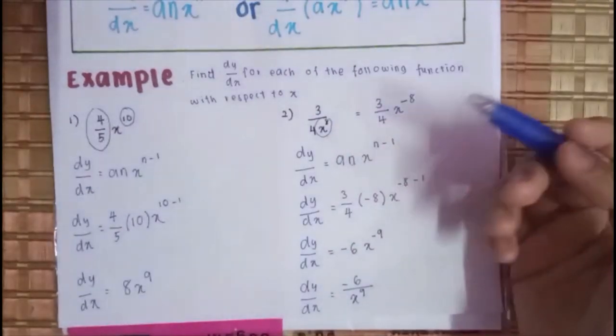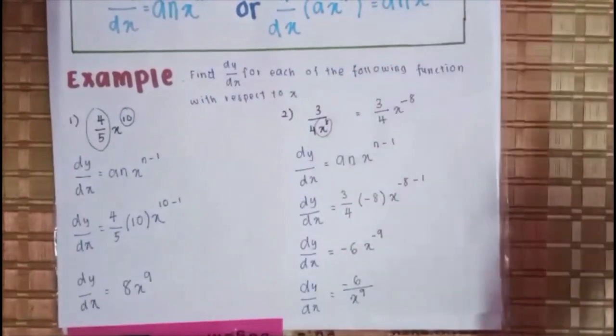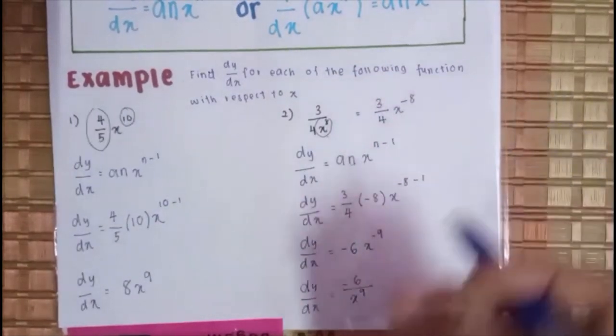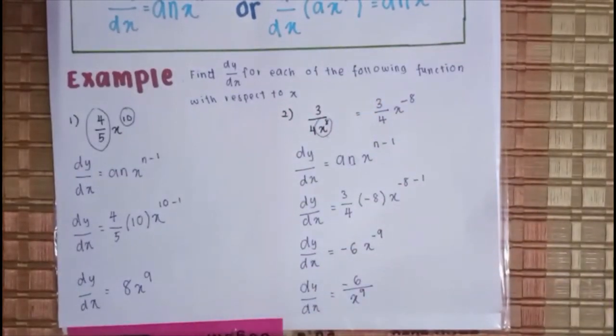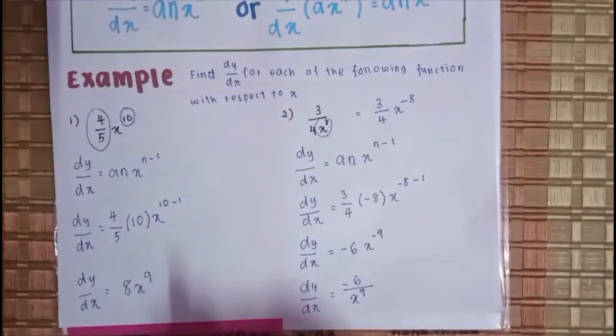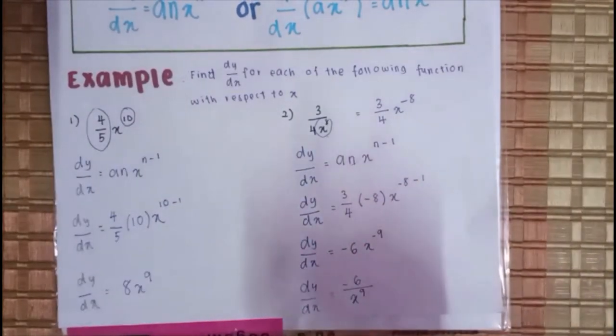Kalau kawan-kawan nak lebih lagi kefahaman tentang tajuk ini, SP kali ini, kawan-kawan boleh cuba latihan muka surat 41. Dekat situ dia ada bagi latihan kendiri 2.3, nombor 1. Kawan-kawan boleh pilih mana-mana soalan yang kawan-kawan nak. Itu sahaja dari saya, Fatimah Tisham dari SMK Jelai. Saya harap kawan-kawan dapat apa yang saya cuba kongsikan pada hari ini.